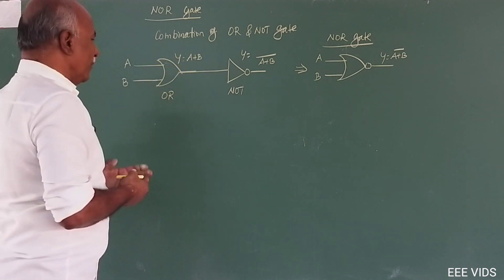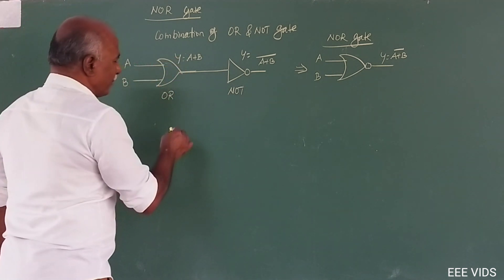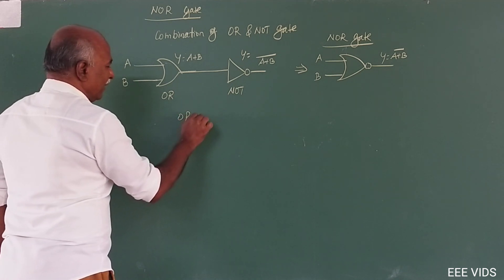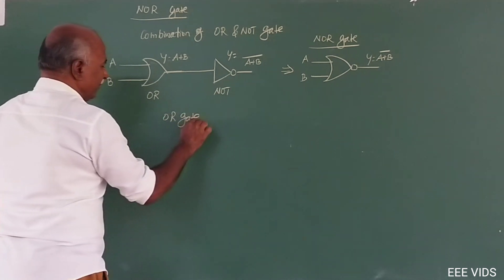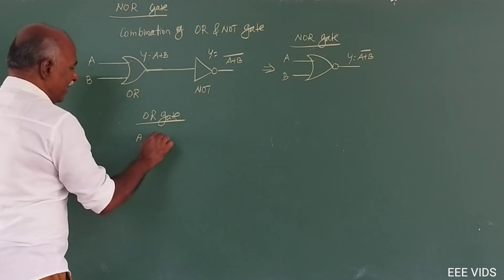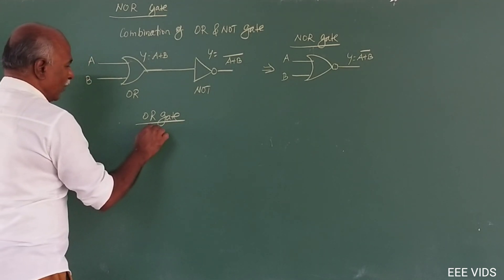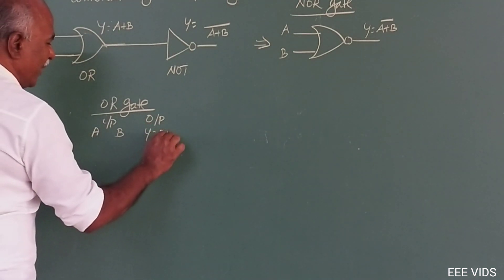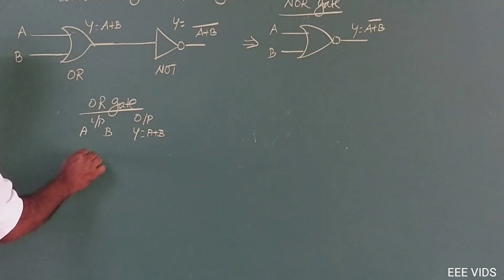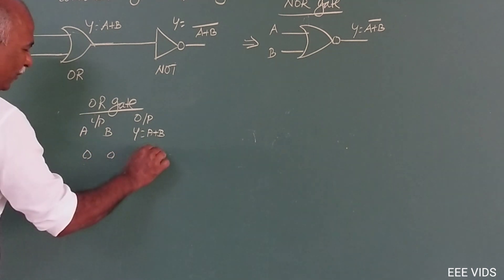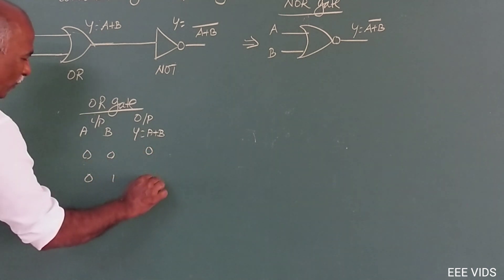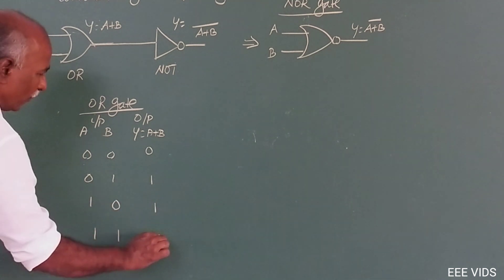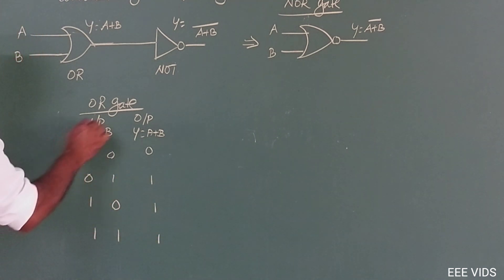Now, what does the truth table look like? The OR gate truth table: Input a, b — output y is equal to a plus b. 0,0 → 0; 0,1 → 1; 1,0 → 1; 1,1 → 1. This is the OR gate truth table.